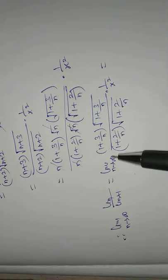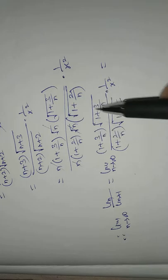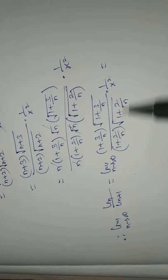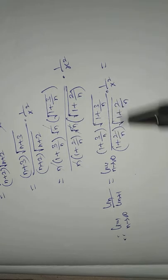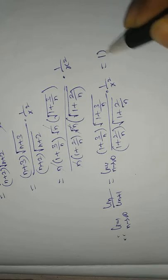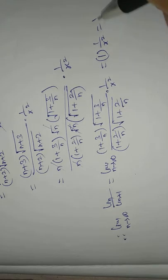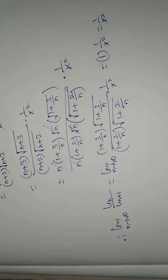Therefore, the limit as n→∞ of U_n/U_{n+1} equals the limit as n→∞ of (1 + 3/n)·√(1 + 3/n) over (1 + 2/n)·√(1 + 2/n), times 1/x². As n→∞, 3/n→0 and 2/n→0, so the expression becomes 1·1 over 1·1 times 1/x², which equals 1/x².